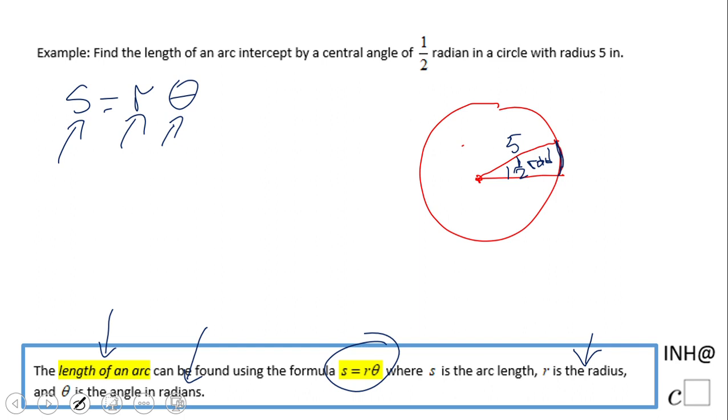What we have here is s equals the radius, which is 5, times the angle in radians, which is one-half. Very simple: 5 times one-half equals 5 over 2, or 2.5. The arc length is 2.5.